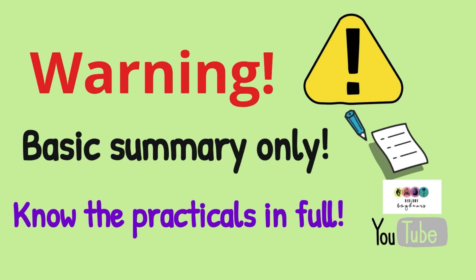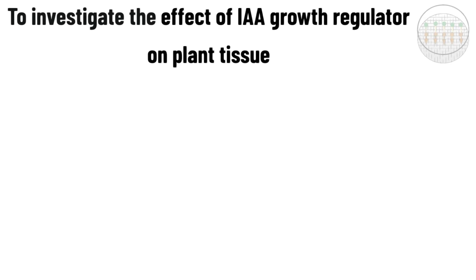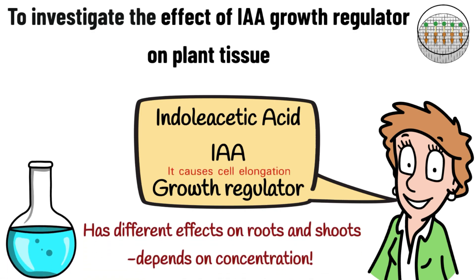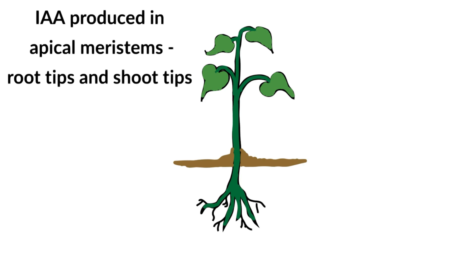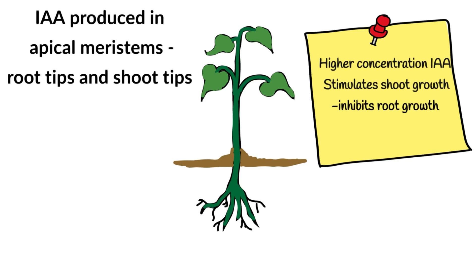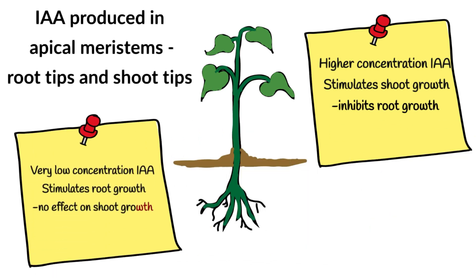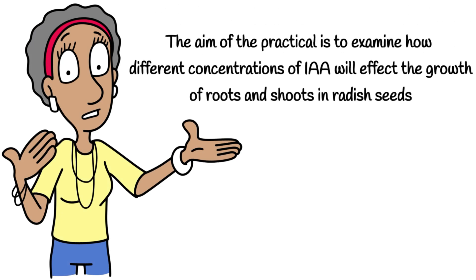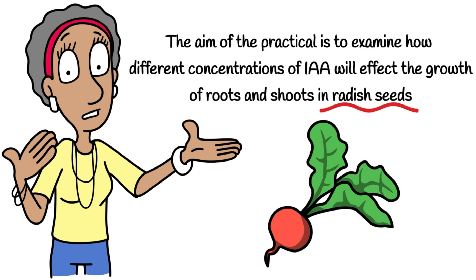The first practical is to investigate the effect of IAA growth regulator on plant tissue. IAA is indoleacetic acid — it's an auxin, a growth regulator, and it causes cell elongation. It has different effects on the roots and the shoots depending on the concentration. IAA is produced in the apical meristems — the root tips and shoot tips of plants. At higher concentrations IAA will stimulate shoot growth and inhibit root growth; at very low concentrations IAA will stimulate root growth and have no effect on shoot growth; but at very high concentrations IAA inhibits both shoot and root growth. The aim of the practical is to examine how different concentrations of IAA affect the growth of roots and shoots in radish seeds — very important to remember radish seeds.